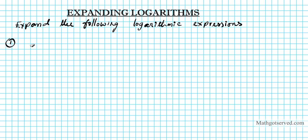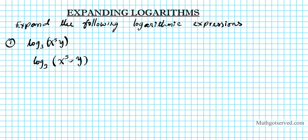Question number one: we have log base three of x to the fifth times y. So how do we expand this? We have to establish the relationship between the two terms that are the argument of the log, which is x to the fifth and y. When you're multiplying the arguments, it's the same thing as adding the log of the independent terms. Since multiplication is addition of logs, you can write this as log base three of x to the fifth plus log base three of y.